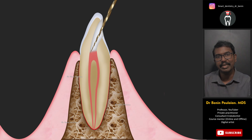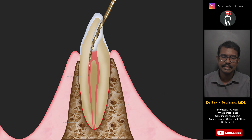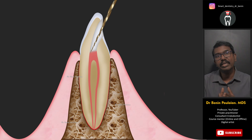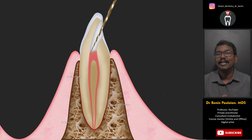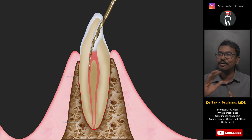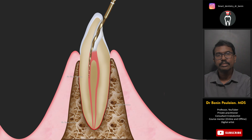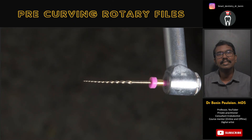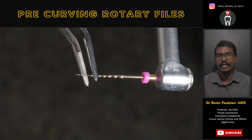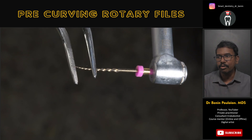After negotiating and creating a glide path with a hand file, the next step is cleaning and shaping with a rotary file. For the labial canal, the rotary file goes inside easily with no problems. But when you attempt to do cleaning and shaping for the lingual canal, the file automatically goes inside the labial canal — however we try, the file keeps going into the labial canal and not the lingual canal.